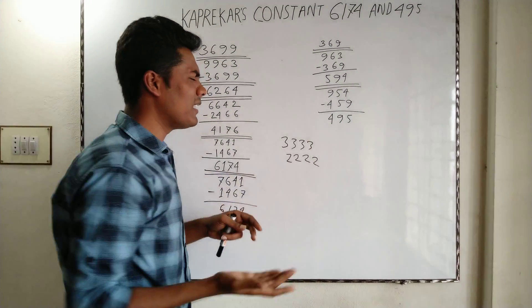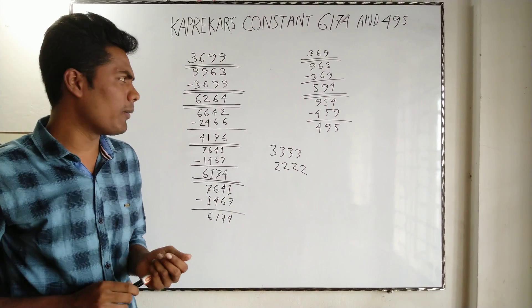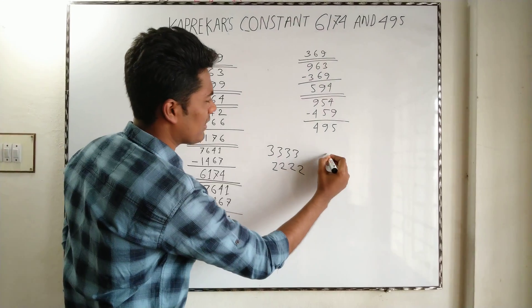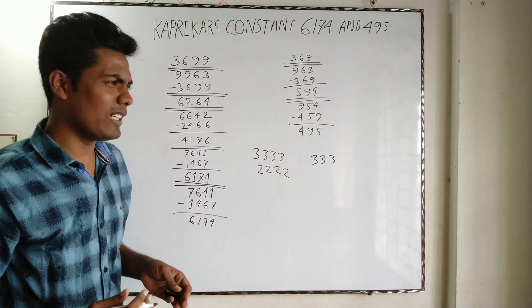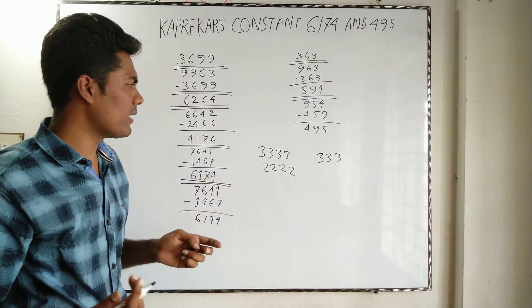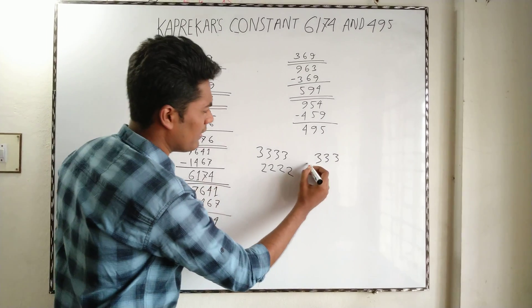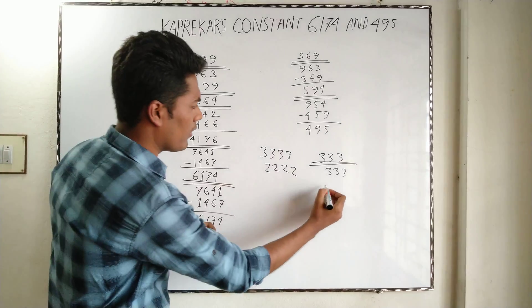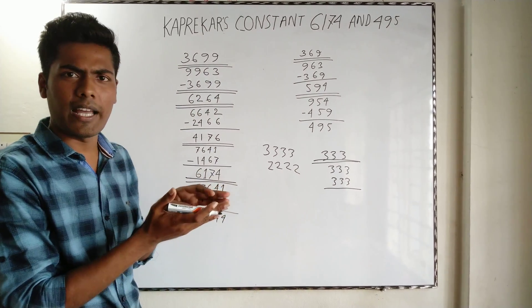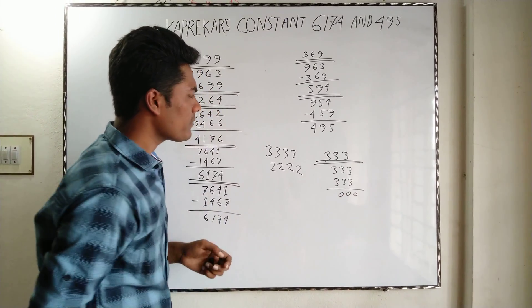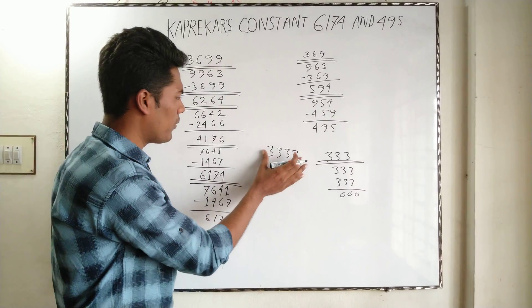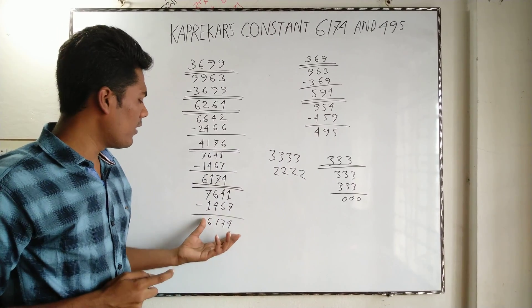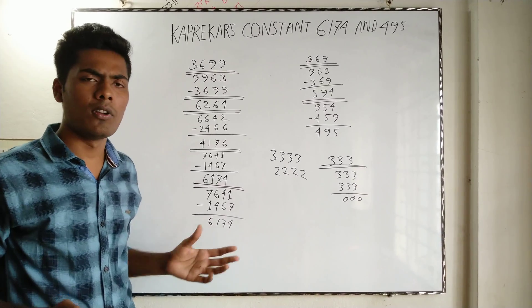You can choose any three-digit number, but you cannot choose one where all digits are the same, like 333. If all digits are the same and you rearrange it, you still get 333, and subtracting gives 000. So we cannot choose that type of number. You may choose three different digits or two same and one different. This procedure is applicable for any valid four-digit or three-digit number, and after a few iterations you will always reach 6174 or 495 respectively.